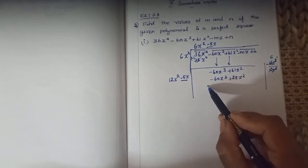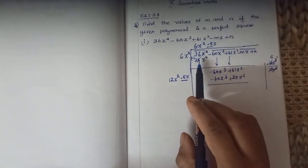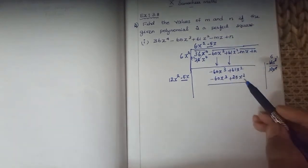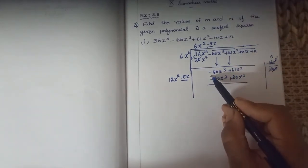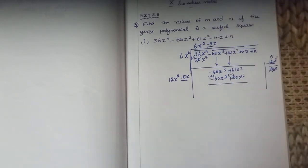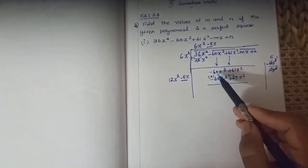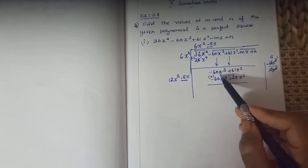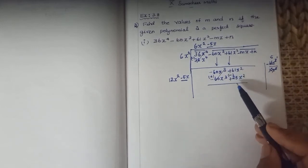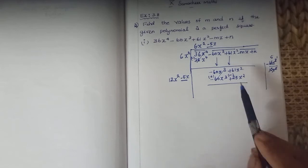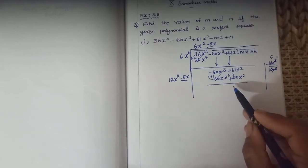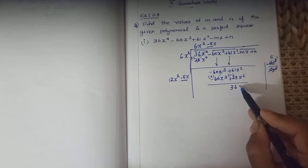Now subtract the second polynomial, changing the signs. Minus R becomes plus R, plus R becomes minus R. So minus 60x cubed plus 60x cubed cancel out. Next, 61x squared minus 25x squared gives 36x squared.